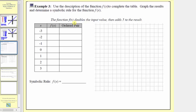The description is: the function f of x doubles the input value, then adds five to the result. Let's begin by writing the equation or formula for f of x. The input variable is x, so doubling x gives us x times two, which is equivalent to two x. Then adding five gives us f of x equals two x plus five, where the function doubles the input and then adds five.